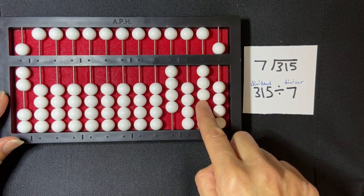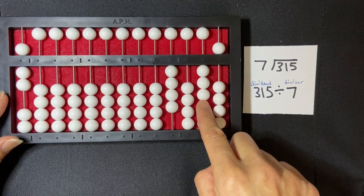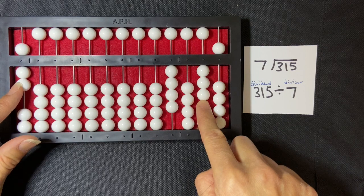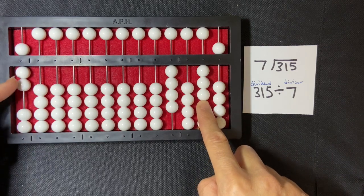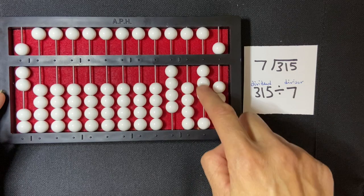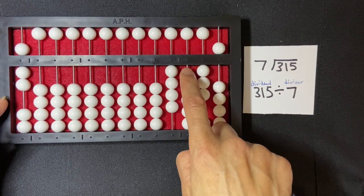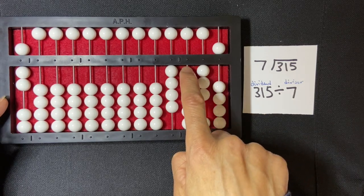So I'm going to start comparing my three to my seven, and again I find that the seven is larger than the three. So I'm not going to skip a rod. I'm going to go directly to the left of my dividend.